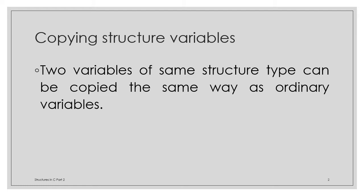If we have two variables of the same structure type, for example student S1 and S2, both of type student structure, you can copy the values of S2 to S1 and S1 to S2 as ordinary variables. Example: struct student S1, S2 - S1 and S2 are of the same structure type.